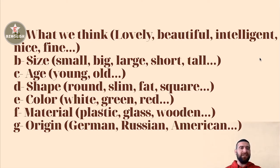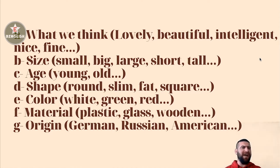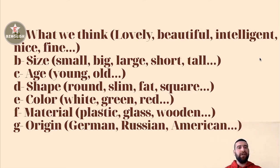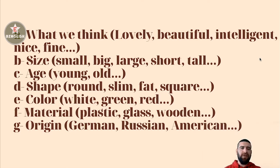Age is the next category — سن و سال. Young means جوان, Old means پیر. Then Shape — شکل — the shape of objects or things: Round, Slim, Fat, Square — گرد، لاغر، چاق، مربعی — these are all adjectives in the shape category.